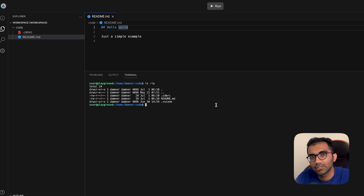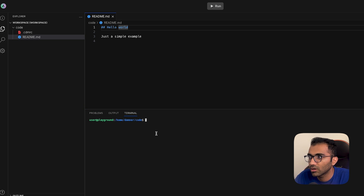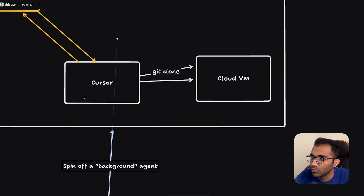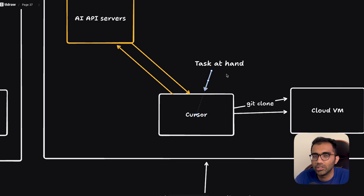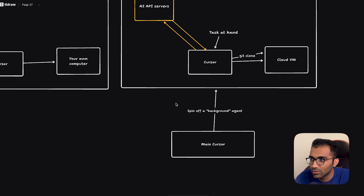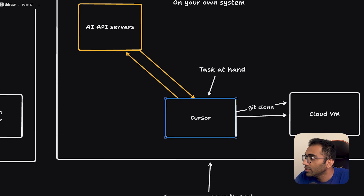On an architecture level: you spin up a computer or compute, you get a cloud instance, you run Cursor, you have all the LLMs, and you have the task at hand from the background agent. So it's all an orchestration of a few things. But the core product which they have already built completely gets reused.